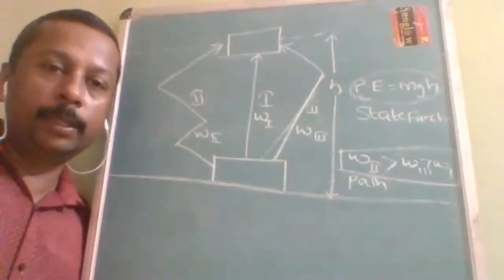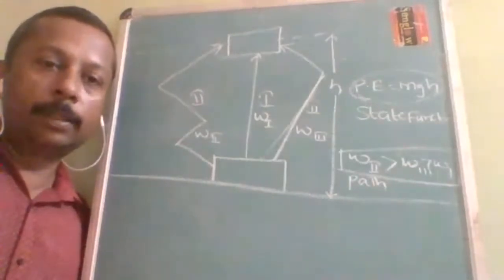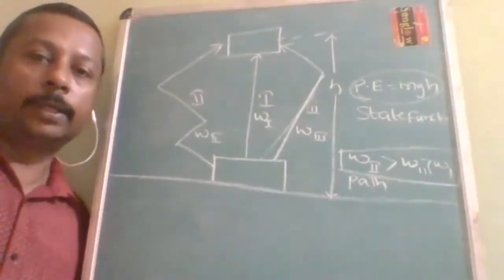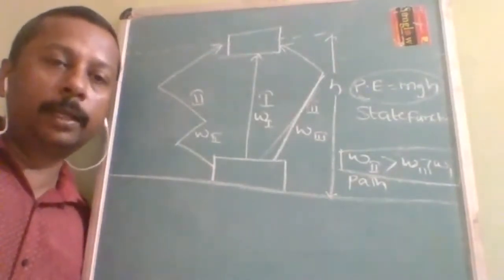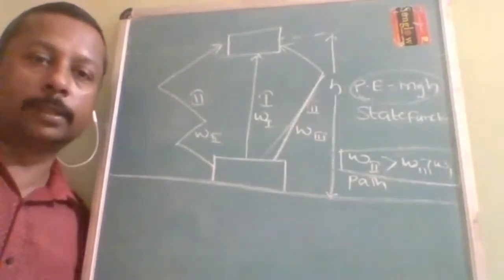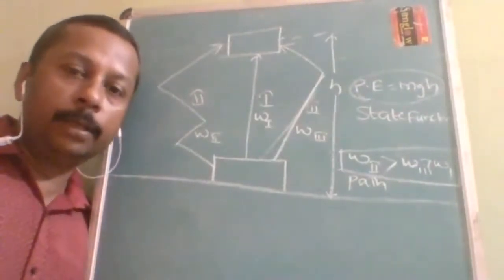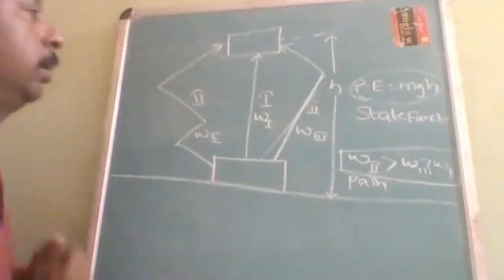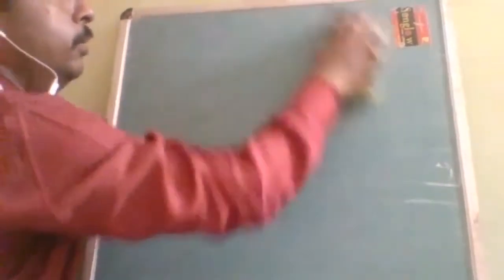The final state is the same, but work done may be different depending on whether it follows the reversible or irreversible manner. Normally, work done will be more in the reversible manner. If a process is carried out in a reversible manner, work done will be more. These are the state function and path function.